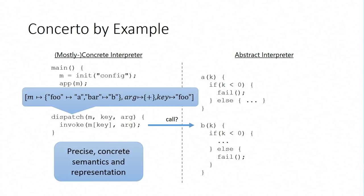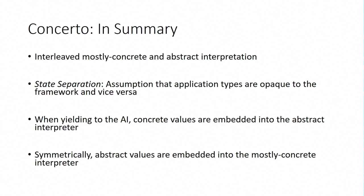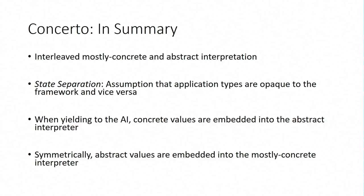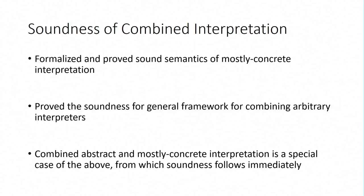All right. So in summary, we've essentially interleaved mostly concrete and abstract interpretation. We have the state separation assumption. And each thing can yield to the other and embed its values in the other side. A lot of the work to date has been proving that this is all sound. Basically, you need to prove that mostly concrete interpretation is a sound abstraction of concrete interpretation. Then you need to be able to combine the two while maintaining soundness. And then everything I showed you on the slide is just a special case of the general idea of combining two things.